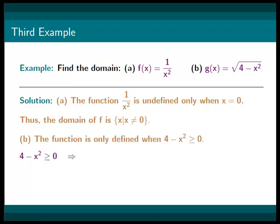Solving the inequality, we get 4 is greater or equal to x squared. Then, we get x has to be greater or equal to negative 2 and less or equal to positive 2.